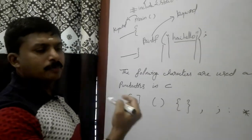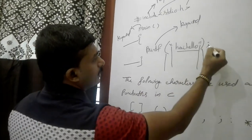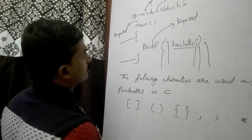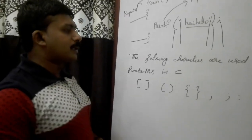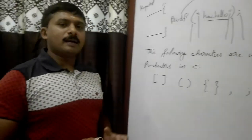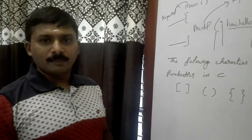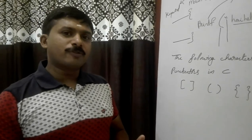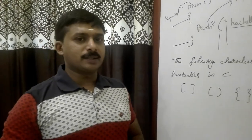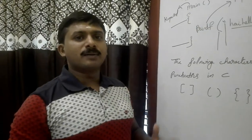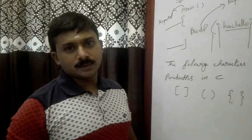We will do a few programs. The tokens used in programming are: keywords, identifiers, constants, strings, and operators. In addition, punctuators such as the semicolon (statement terminator) and braces are also part of C tokens.